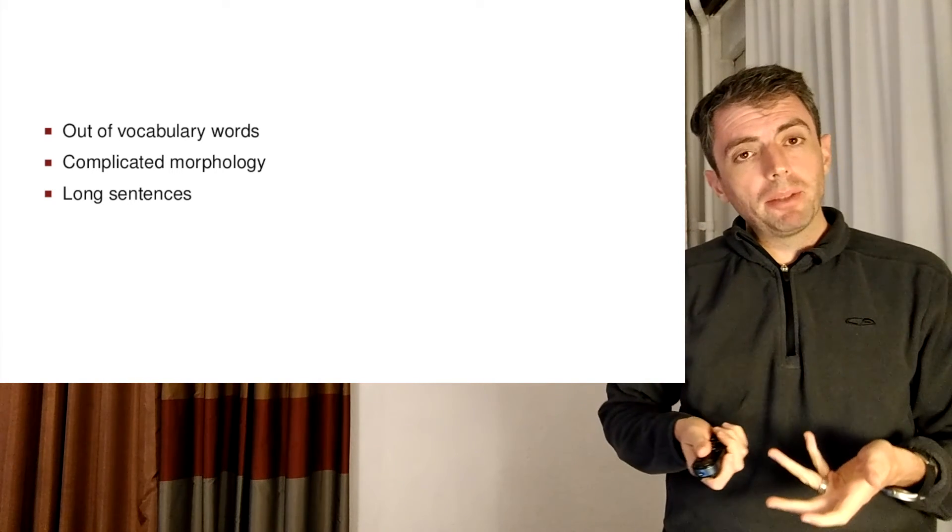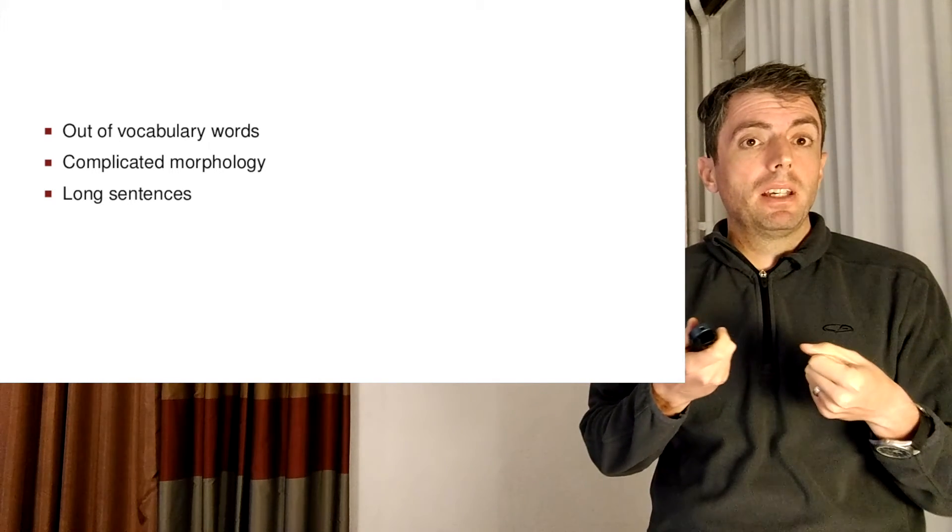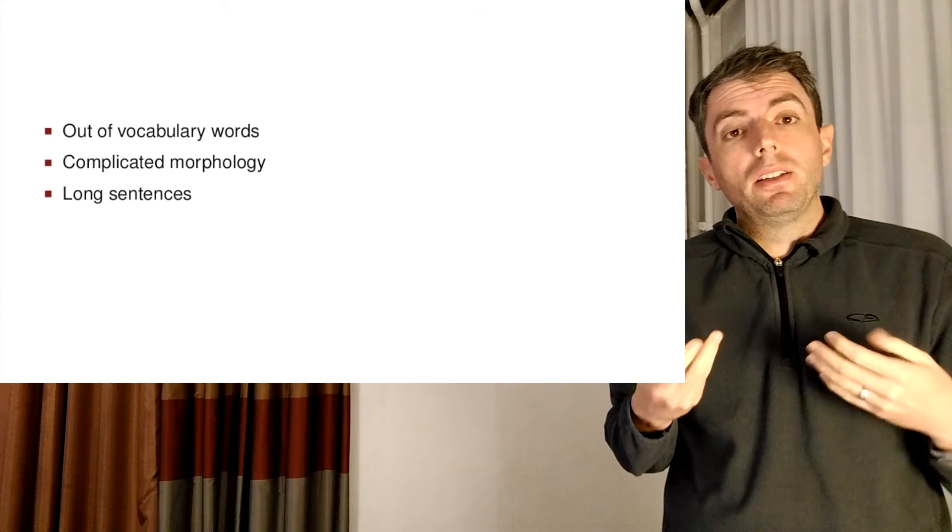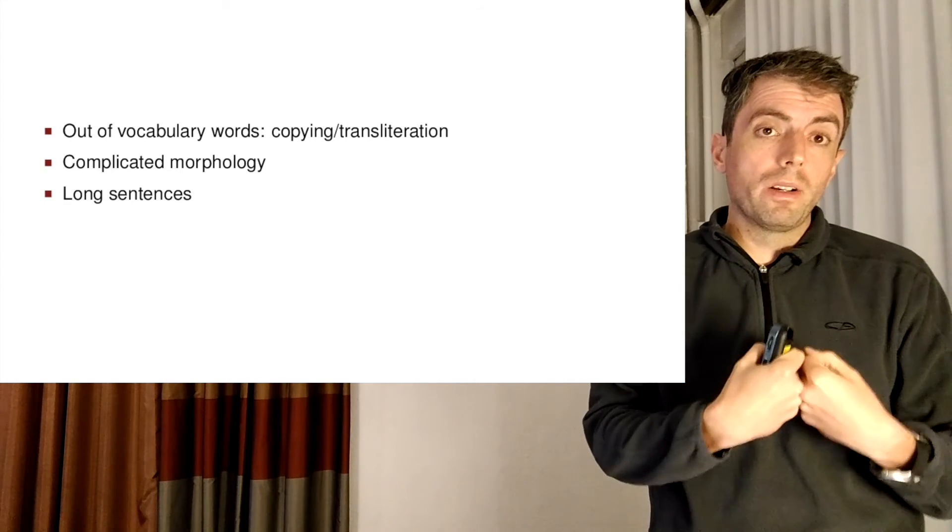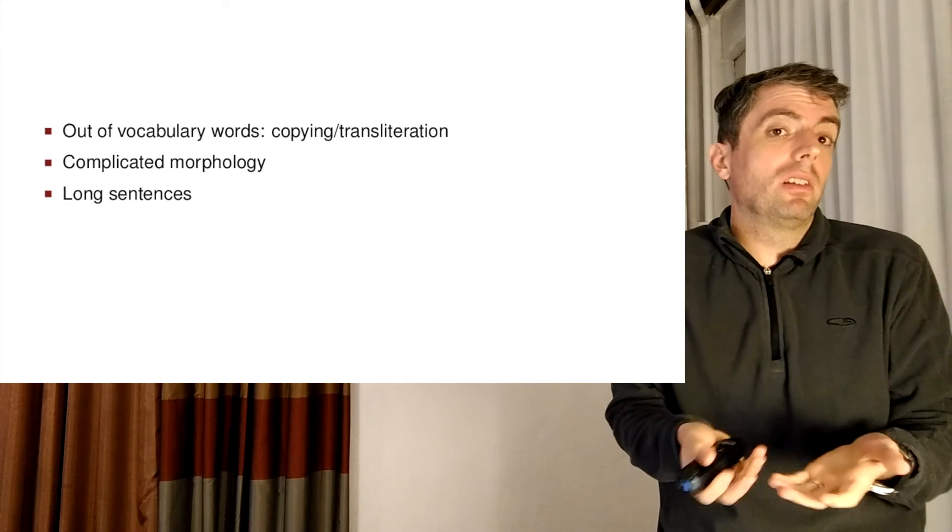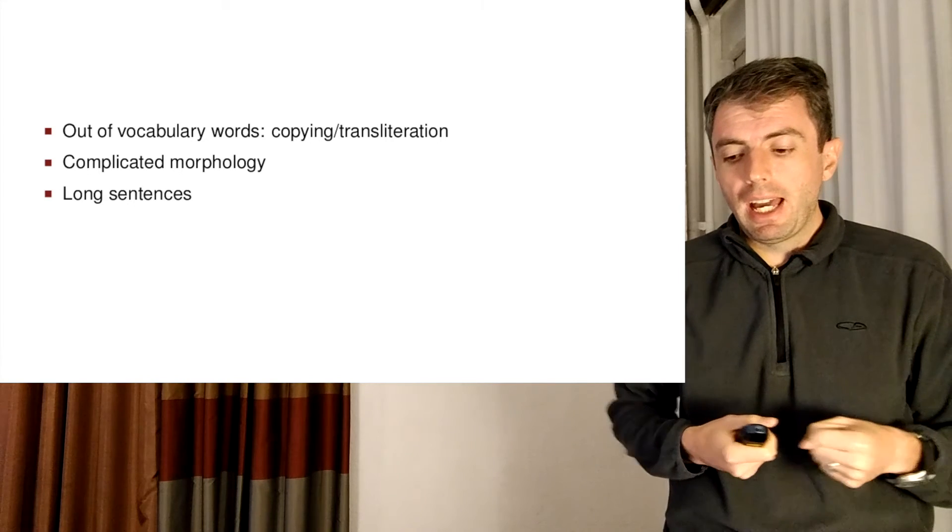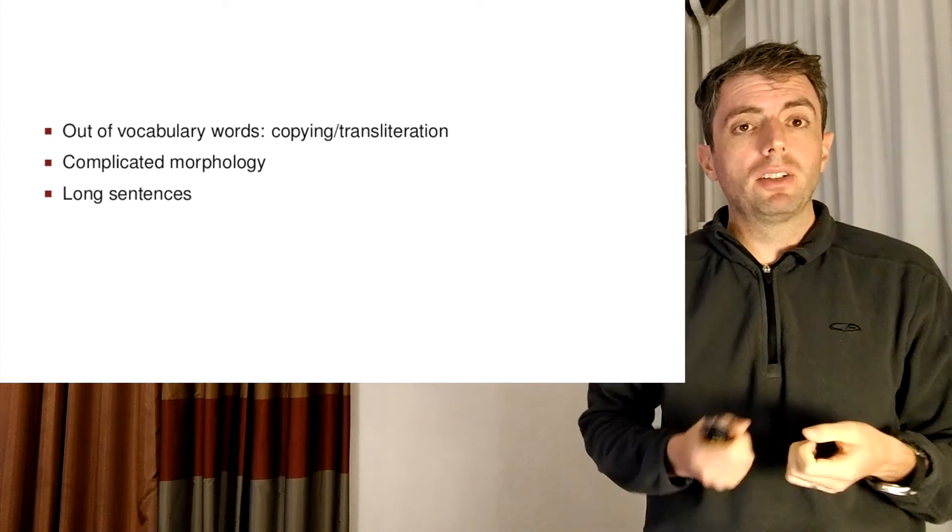For out of vocabulary words, if you see a name that you haven't seen before, you need to do something like transliteration to get the word in the source language into what it should look like in the target language. And you can either directly copy or do some sort of transliteration. This has been standard even in phrase translation models.